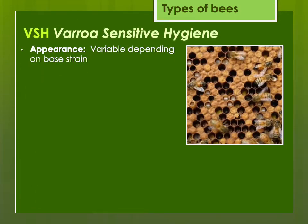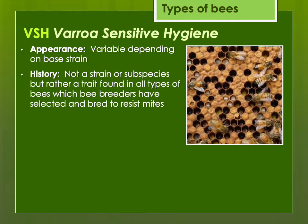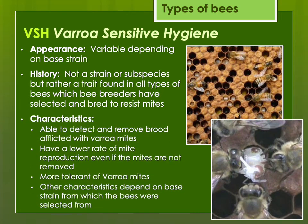Varroa Sensitive Hygiene, or VSH, is variable depending on the base strain — it's not really a strain but rather a trait that has been selected for by bee breeders. These bees are able to detect and remove brood afflicted with varroa mites, resulting in a lower rate of mite reproduction and greater tolerance. It's not that they're completely resistant — they may require mite treatments, but it takes longer for the varroa mite population to build up to a problem level. If you get a pure VSH queen and raise queens from her that cross with local bees, she'll only be 50% VSH, but colonies with 50% expression still have a fair amount of tolerance to varroa mites.